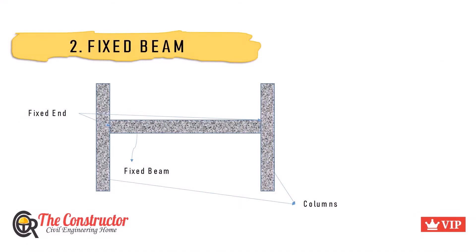Fixed beams are beams whose both ends are fixed or rigidly connected to another support like a wall. Also called a building beam, there are certain reactions created at the fixed ends of the beam.